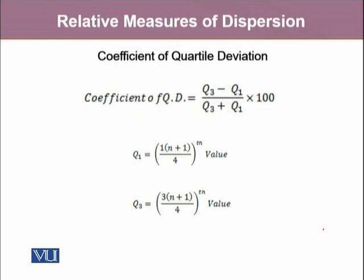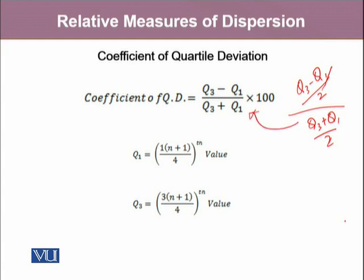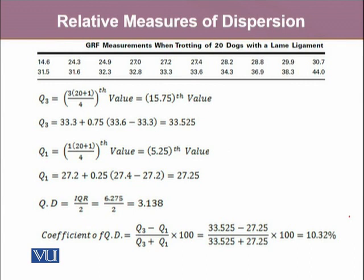The coefficient of quartile deviation is another relative measure of dispersion. It is calculated as (Q3 minus Q1) divided by 2, divided by (Q3 plus Q1) divided by 2. Cross-multiplying simplifies this formula, where Q1 and Q3 are measured using the usual methods discussed earlier. In the GRF measurement data, Q3 is 33.525 and Q1 is 27.25, giving a quartile deviation of 3.138 Newtons, and a coefficient of quartile deviation of 10.32%.